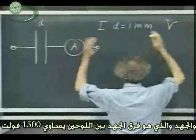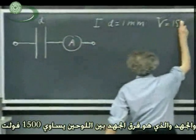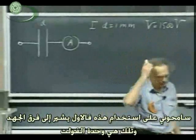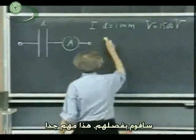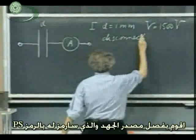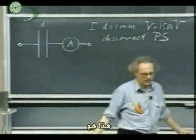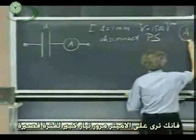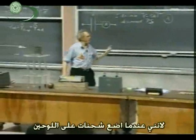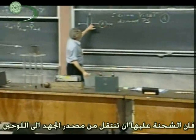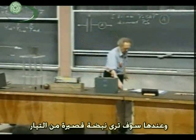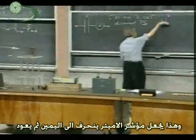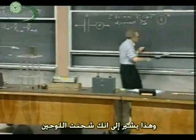The voltage V — which always means the potential difference between the plates — is going to be fifteen hundred volts. Once I have charged them, I disconnect the power supply. The charge is now trapped. As I charge it, you will see that the amp meter shows a short surge of current, because as I put charge on the plates, the charge has to go from the power supply to the plates. You will see a short surge of current, which will make the hand of the amp meter go to the right side briefly and then come back. This indicates that you're charging the plates.